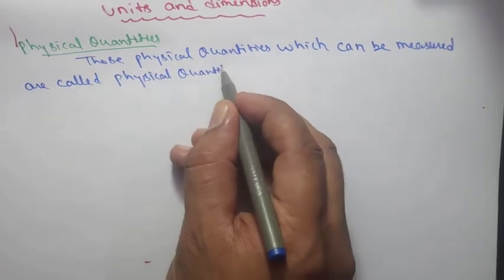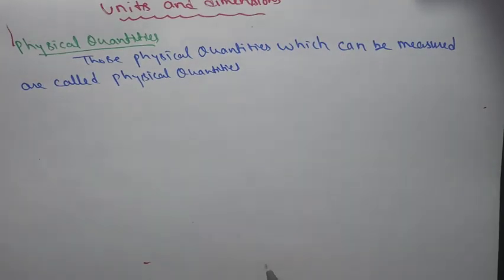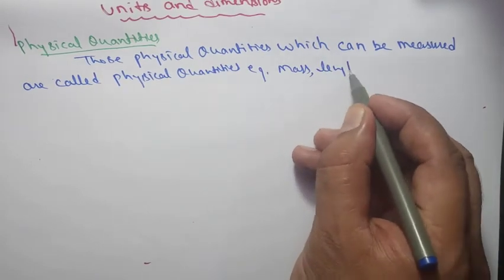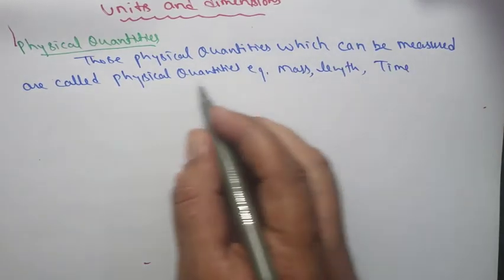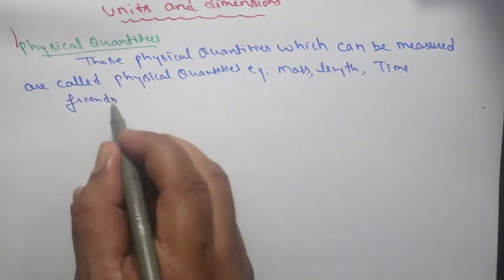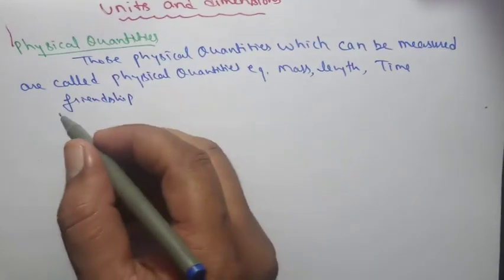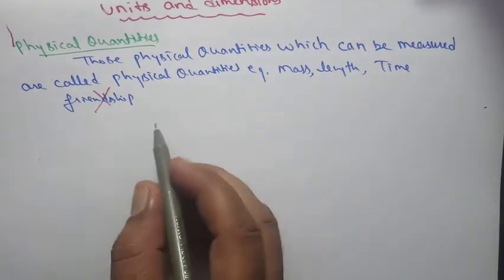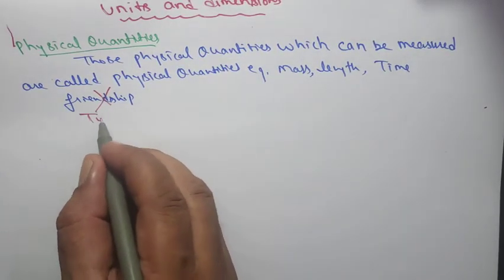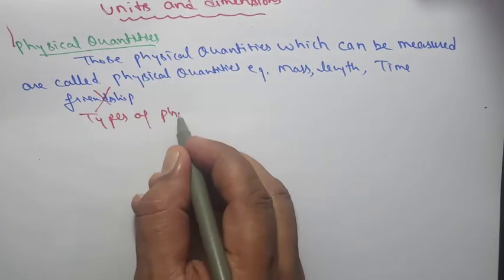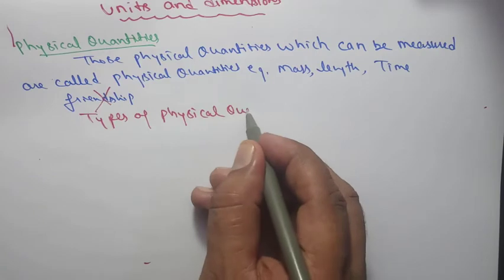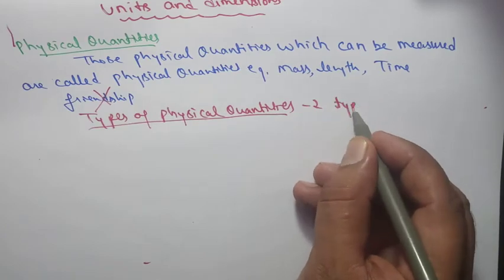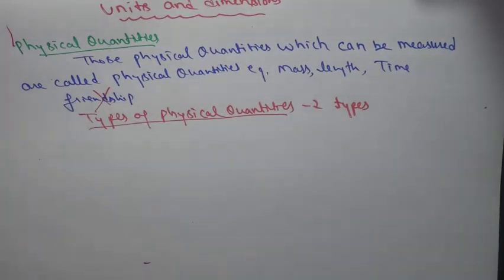Examples of physical quantities: length, time. Friendship cannot be measured — you can't find out how many kilograms of friendship a friend has. So friendship is not a physical quantity. Physical quantities are of two types.